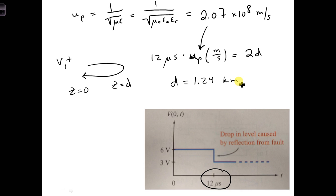Finally, as a third part to this question, this problem, determine the fault shunt resistance, the value of the resistor going between the two conductors at the fault.